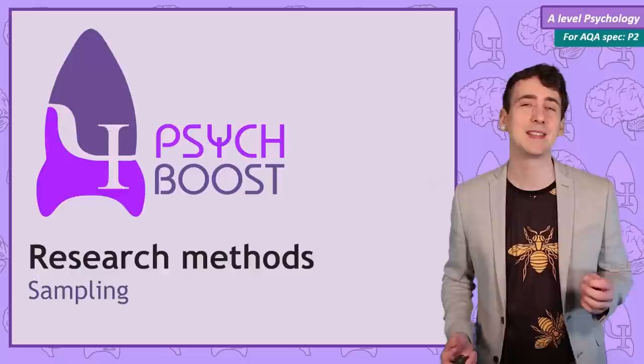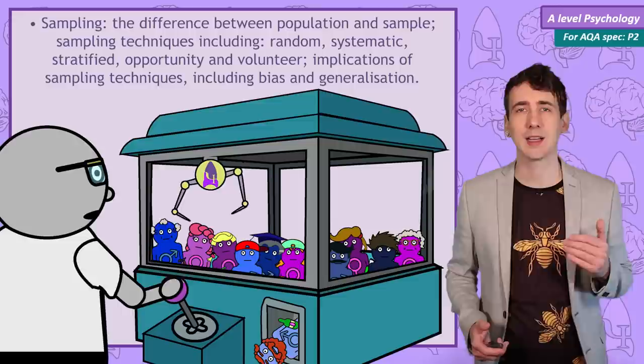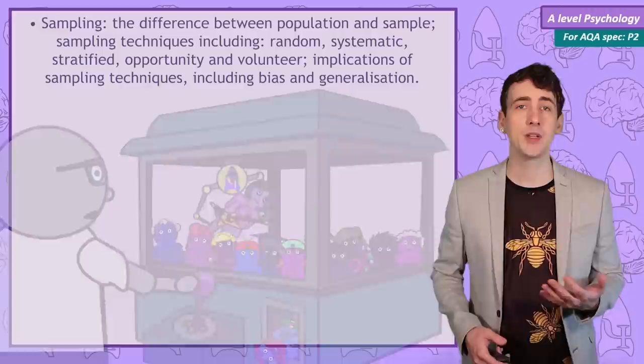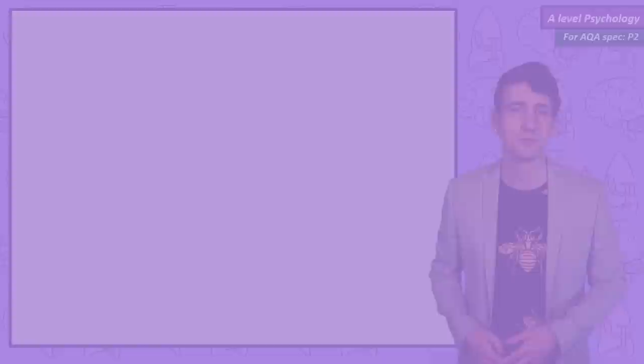This research methods and psychology video is about sampling. When researchers conduct studies and publish findings, it's tempting to think that the findings apply to all of us. But we need to think carefully about who exactly took part in the study and if the behaviour of those participants can be generalised to everyone. In this video we're going to be looking at five sampling techniques: random, systematic, stratified, opportunity and volunteer, and we will consider the strengths and weaknesses of each.